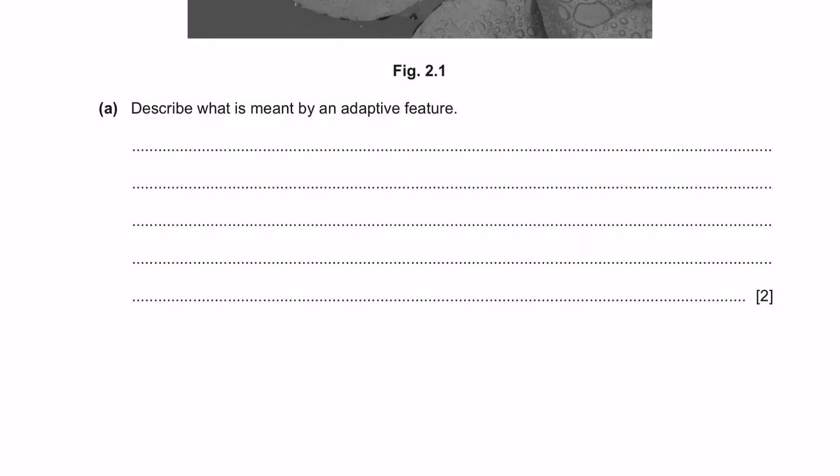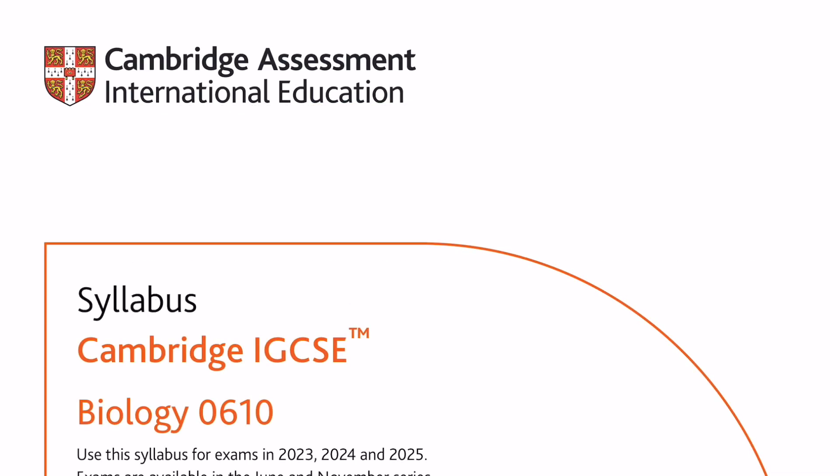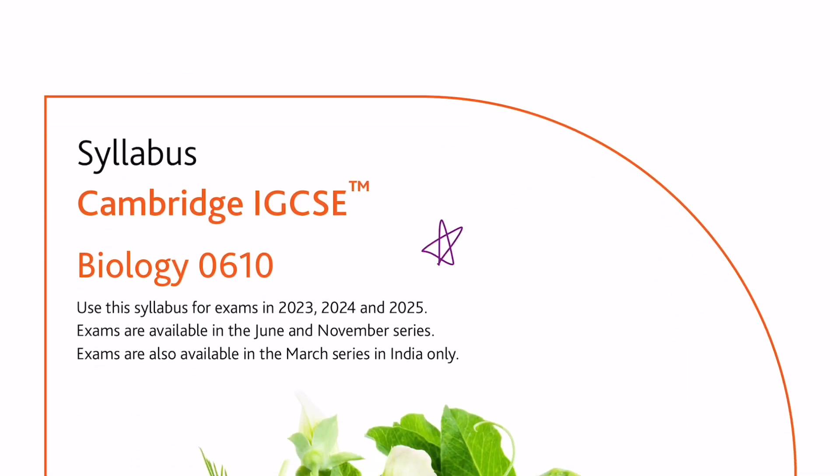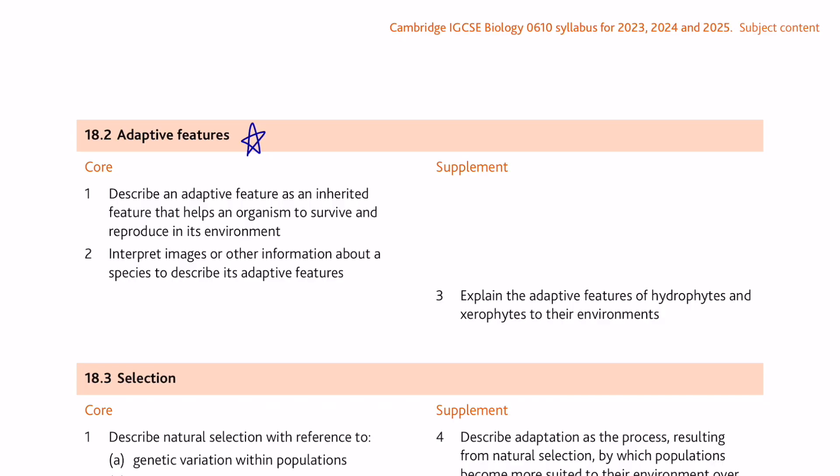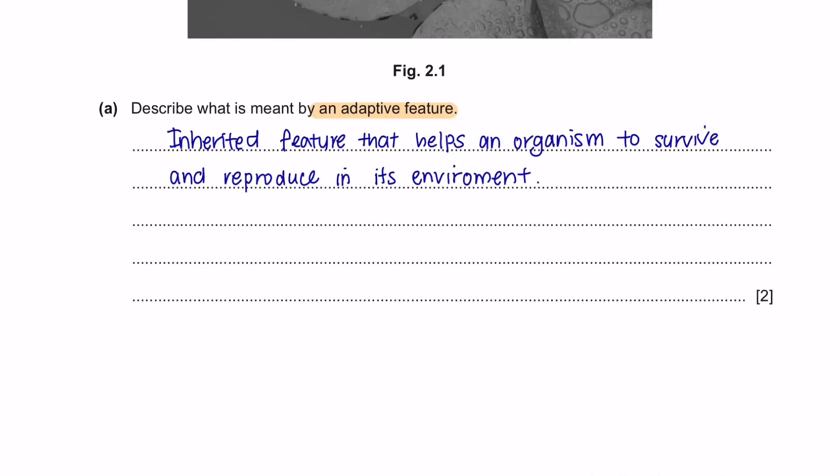Question A. Describe what is meant by an adaptive feature. To get the definition of the terms that you learn in biology, you can always refer to the core specification. Make sure you are looking at the right one. I will attach the link to this in the description box below. If you go to chapter 18 under Adaptive Features, you will see that you have already been given the description for adaptive feature, whereby it is inherited feature that helps an organism to survive and reproduce in its environment. Remember that you can get almost all of your definitions, as per the marking schemes, from your core specification. So make sure you have them for all of your subjects for IGCSE, as it can be really handy.